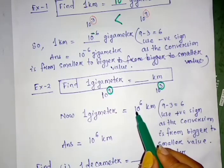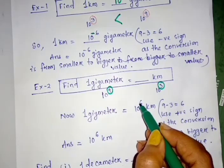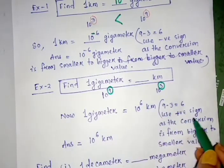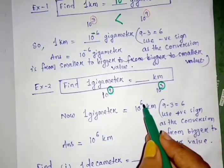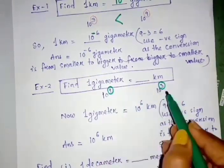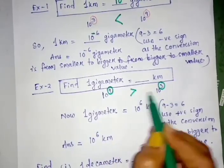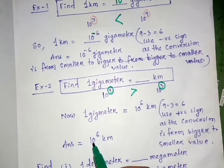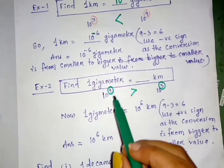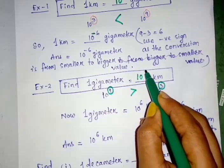Write down the value 10 to the power 6 and use a positive sign, or leave the positive sign as there's no necessity for it, since the bigger quantity is converted into a smaller quantity. So the value remains as is. The final answer is 10 to the power 6 kilometer. Therefore, 1 gigameter equals 10 to the power plus 6 kilometer.